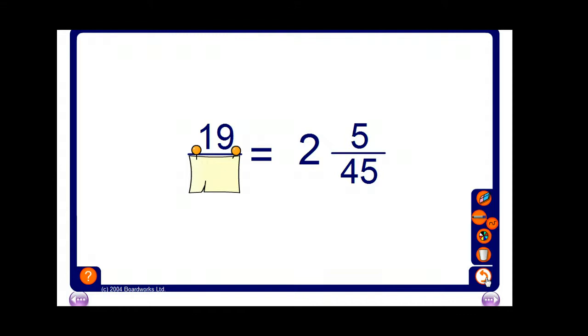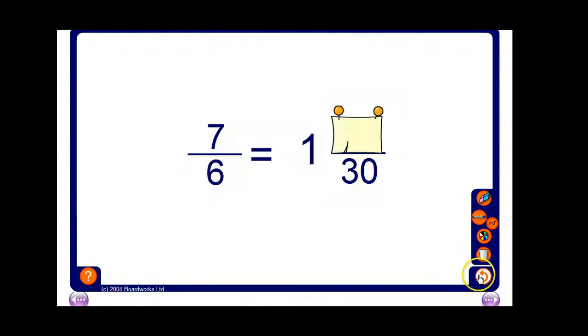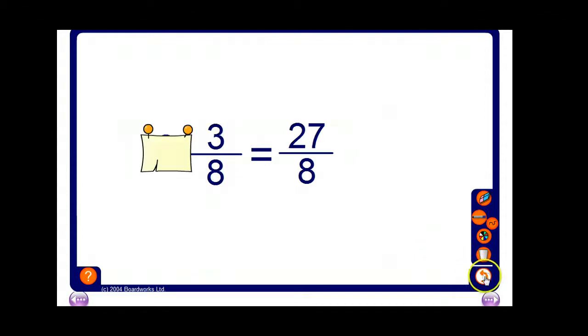Let's have a look. Okay. 2 wholes and 9 tenths. Well, there's 20 tenths in here. There's 10 tenths in each whole, so that makes 20 tenths in this bit here, plus 9 more makes 29 tenths.